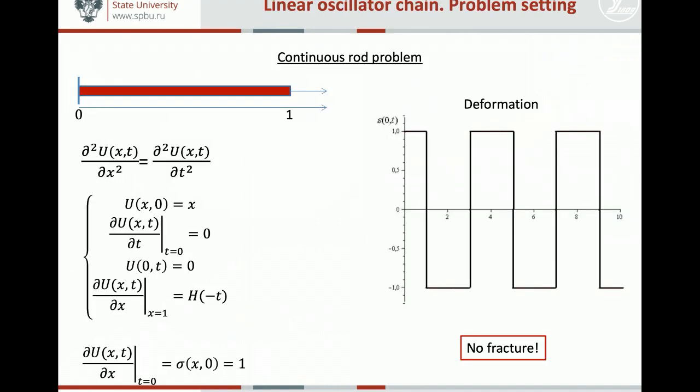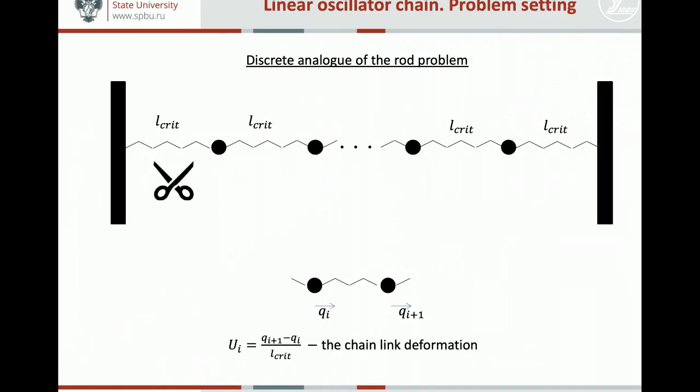Now we are switching to a more complicated problem which describes fracture of discrete systems with some period. But we are going to start with a continuous problem. Let's consider an elastic rod which is pre-stressed and which is suddenly released. As we know, an elastic release wave will start to propagate along the rod and no fracture will occur. It is very natural for us that a release wave will not cause any fracture.